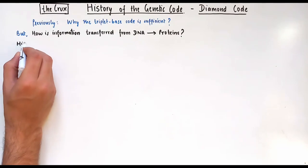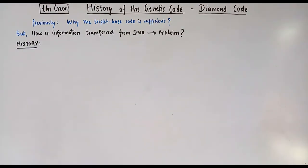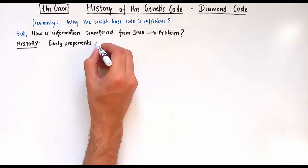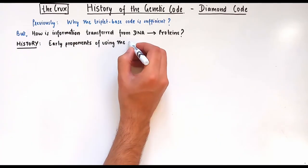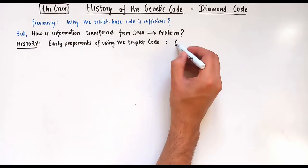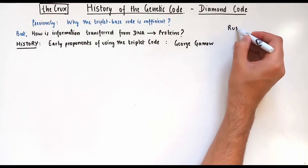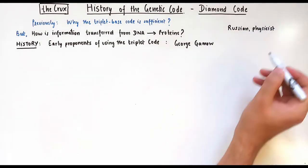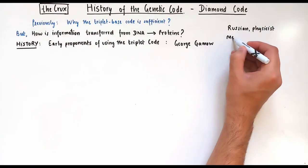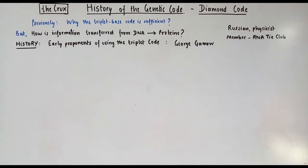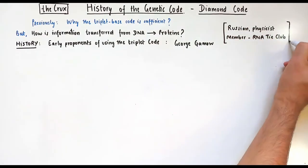Since this video is a historical perspective on the genetic code, one of the earliest theory on the utility of the triplet code came from George Gamow. George Gamow was a Russian physicist who was also interested in the coding potential of the DNA, and he was also a member of the RNA-type club. If you want to know more about the RNA-type club, please see the link in the description.